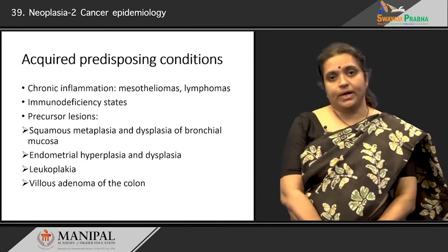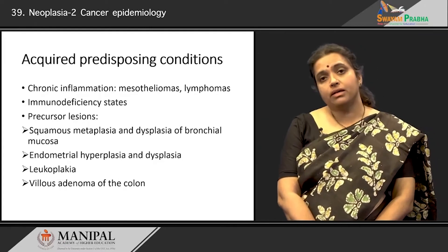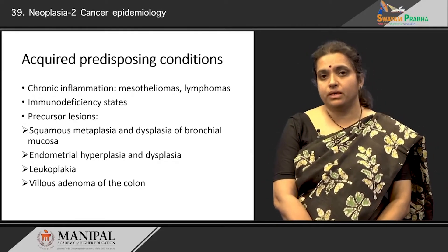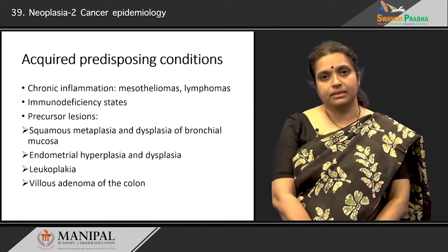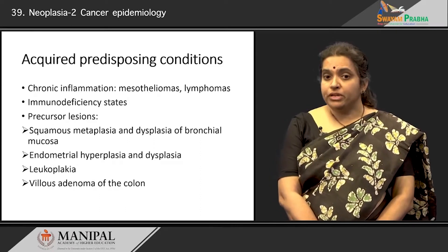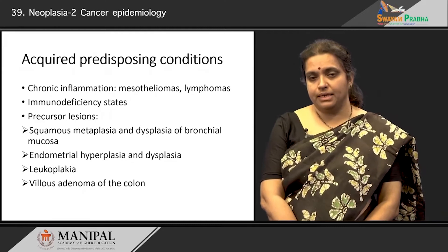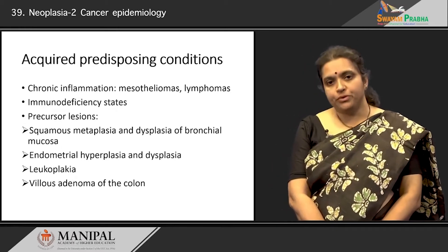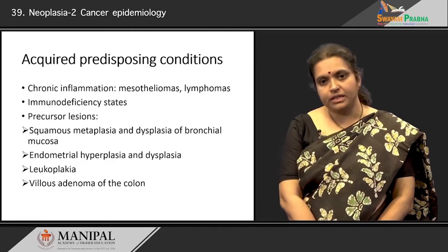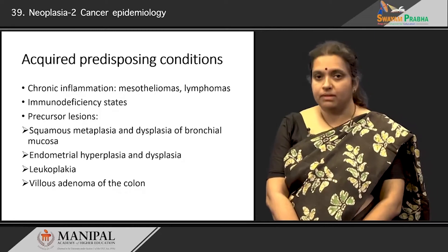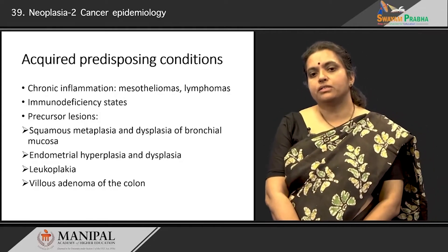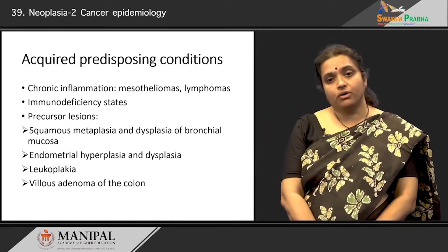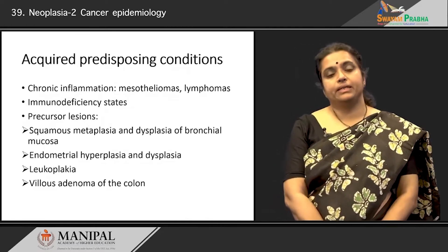Certain predisposing conditions that are acquired can lead to cancer. For instance, chronic inflammation can lead to certain cancers such as mesotheliomas of the mesothelial lining, and lymphomas can occur in people with chronic inflammation. Immunodeficiency states — a lessened immune status — can also lead to cancer, and cancers are more common in people with immunodeficiencies such as those suffering from HIV. Certain precursor lesions can develop into cancer, such as chronic irritation causing squamous metaplasia of the respiratory tract due to smoking, which could eventually lead to dysplasia and finally cancer.